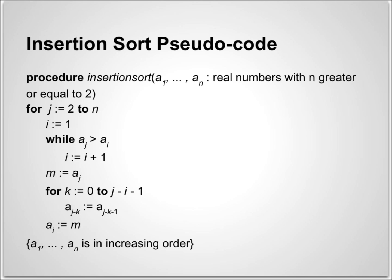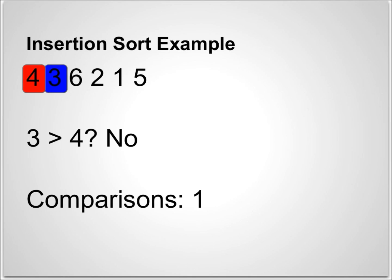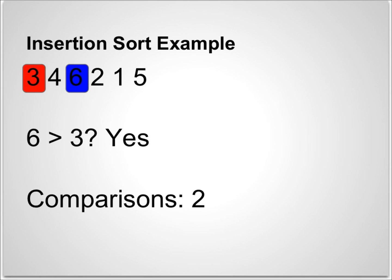And now for an example of Insertion Sort. Again, we look at the same list: 4, 3, 6, 2, 1, 5. Once again, we begin by inspecting the first and second elements. Note that 4 is greater than 3, and these will therefore switch. We continue examining 3 by comparing it with 6. Is 6 greater than 3? Yes. This makes us move to 4 and compare it with 6. Is 6 also greater than 4? Yes. Both stay.